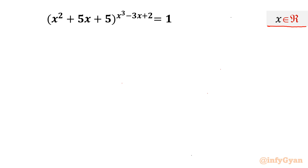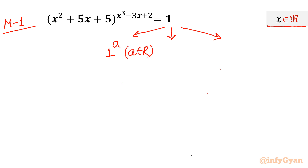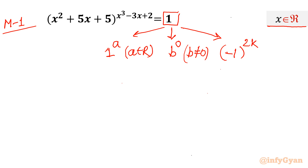Let's get started with Method 1. I will demonstrate three cases for how we can write the RHS as 1. First case: if the base is 1 and the power is any real number a. Second case: if the power is 0, where the base b is not equal to 0. Third case: if the base is negative 1 and the power is an even integer 2k, where k belongs to integers — since (-1)^(2k) always equals 1.